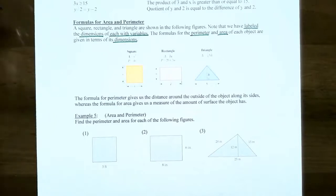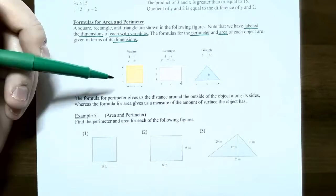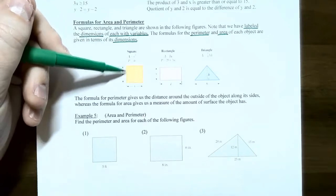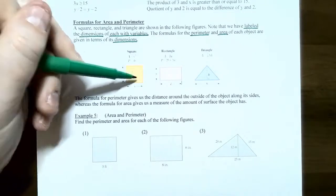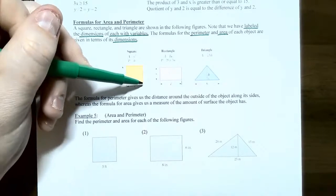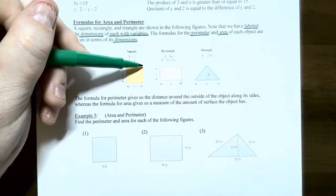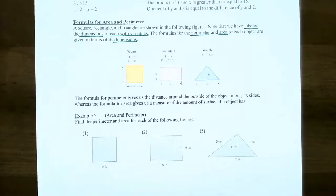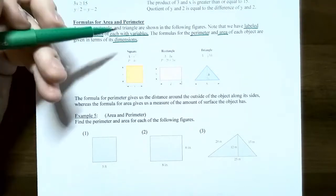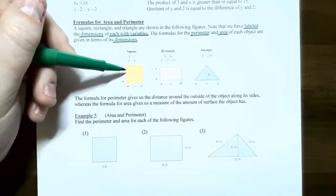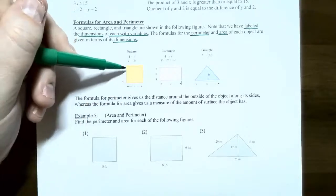Perimeter just means distance around the geometric figure. A square has all four sides the same length. If you represent the length of one side as s, then all four sides have length s. So s plus s plus s plus s gives you 4s — four times the length of one side gives you the perimeter. The area of a square is length times width, which is s times s, or s squared.